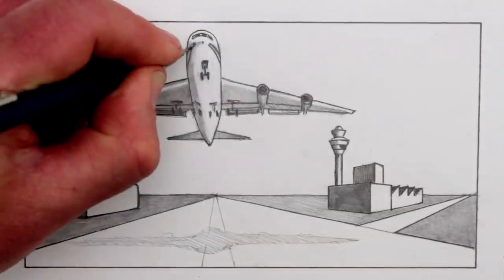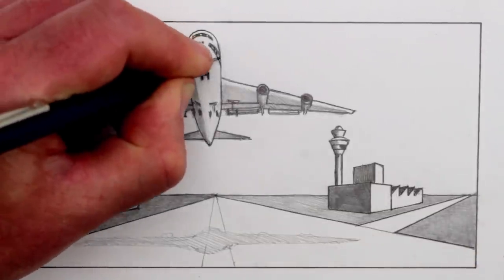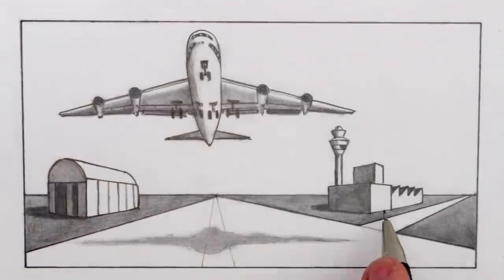And now I can add some small windows at the front of the plane. I will now draw a door and a few simple windows on the airport on the right.